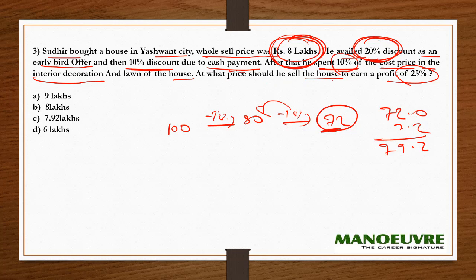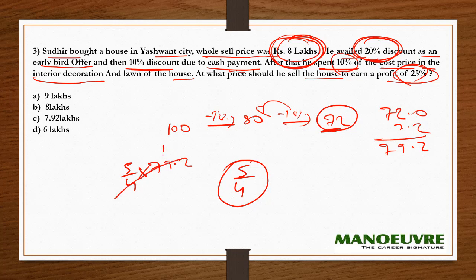At what price should he sell the house to earn a profit of 25 percent? Since 25 percent in fraction is 1/4, to make a profit of 25 percent, multiply by 5/4. So 5/4 × 79.2: dividing 79.2 by 4 gives 19.8, and multiplying by 5 gives 99. So the selling price is 99 (on the base of 100 we assumed).